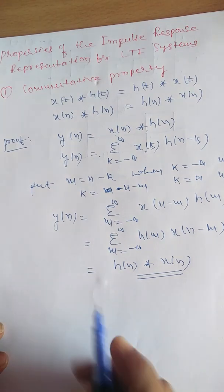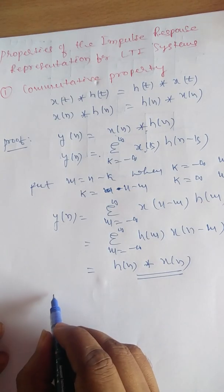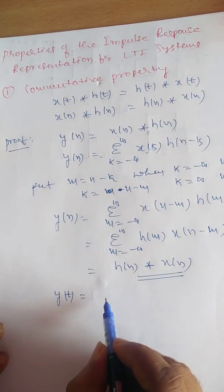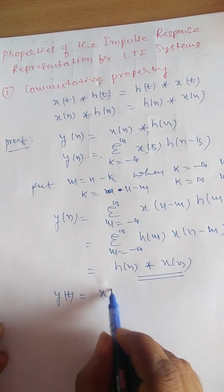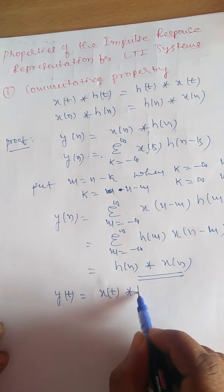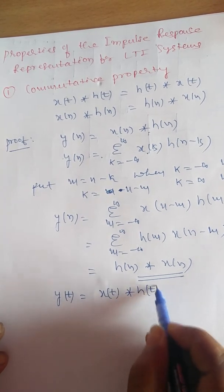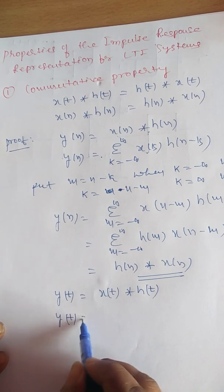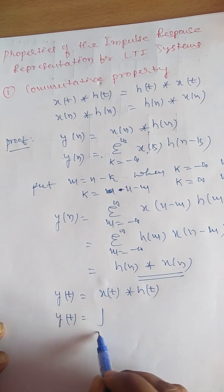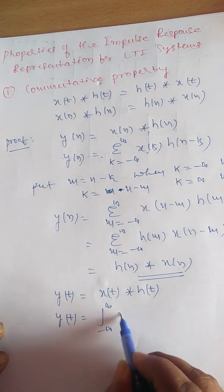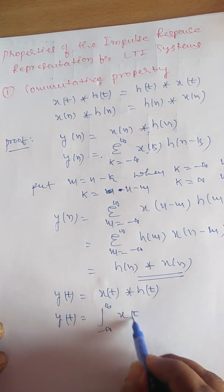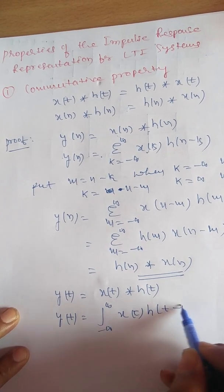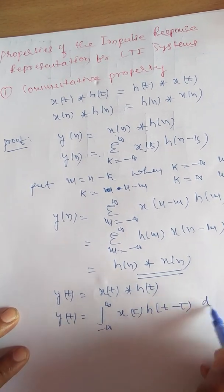Similarly, in the case of a continuous time signal, y(t) equals x(t) linearly convolved with h(t). This can be written as y(t) equals the integral from minus infinity to plus infinity of x(τ) into h(t minus τ) dτ.